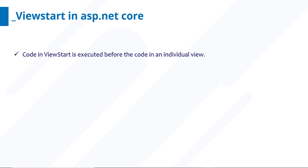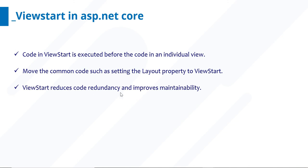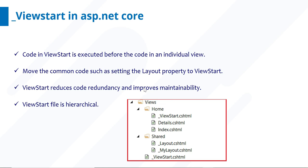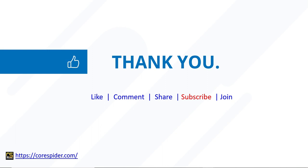Let's discuss the final observations of ViewStart in ASP.NET Core. The code in ViewStart is executed before the code in individual views — first it calls ViewStart.cshtml and finds the layout property, then goes to the individual view. Move common code such as setting the layout property to the ViewStart file. ViewStart reduces code redundancy and improves maintainability. The ViewStart file is hierarchical, as we have already discussed. Do like and subscribe for more upcoming videos — thanks for your time.